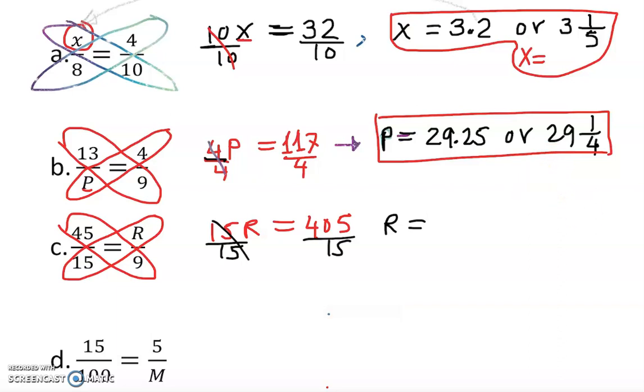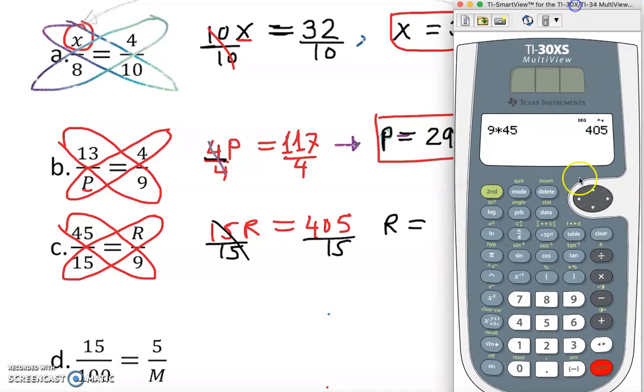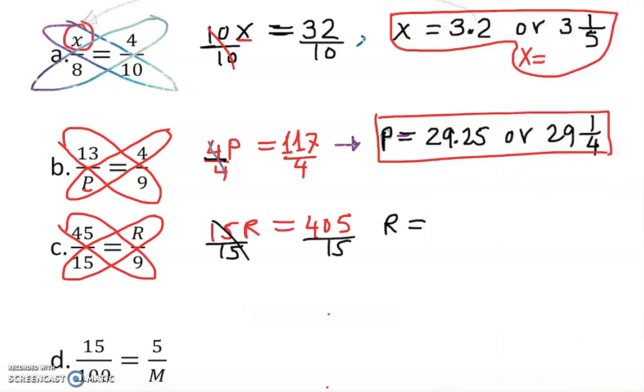We need to cancel out 15, so R is equal to 405 divided by 15, that gives you 27. It's a nice whole number, so that is our answer: 27.